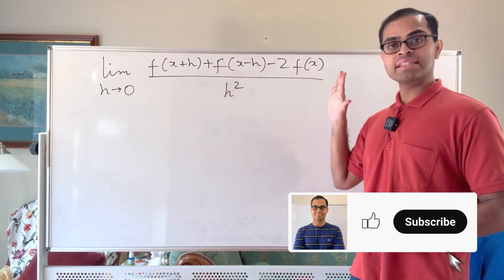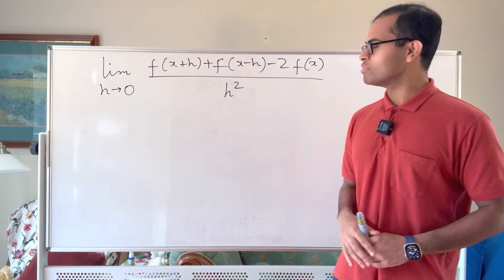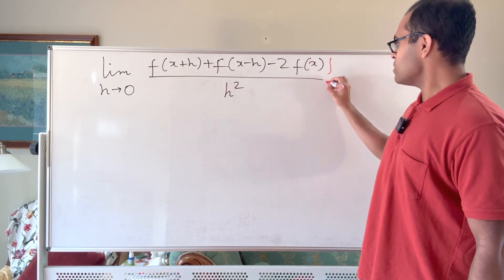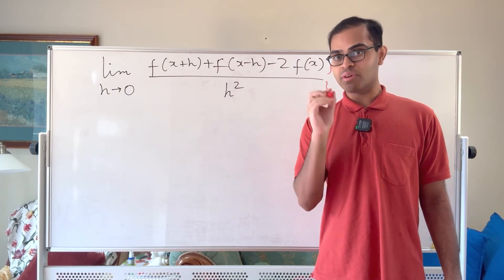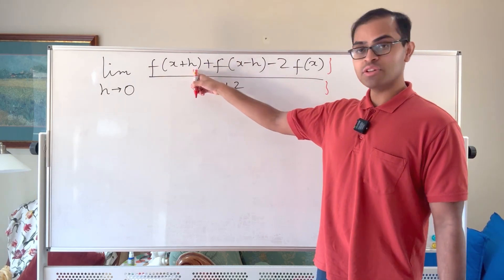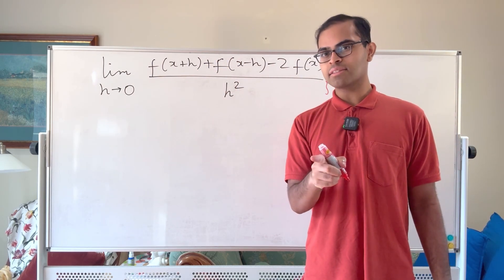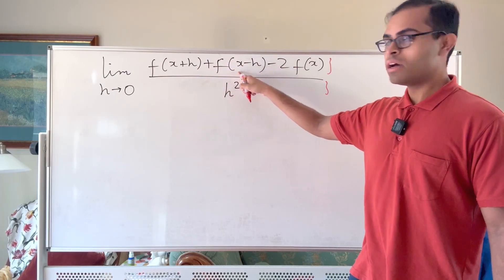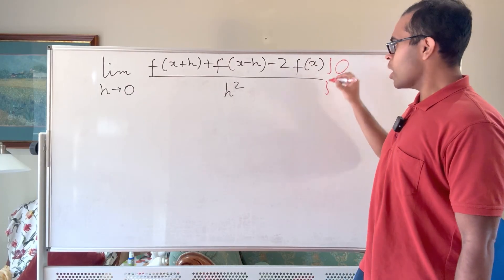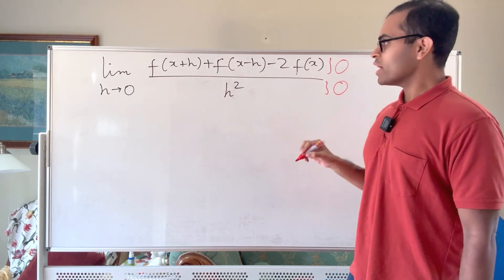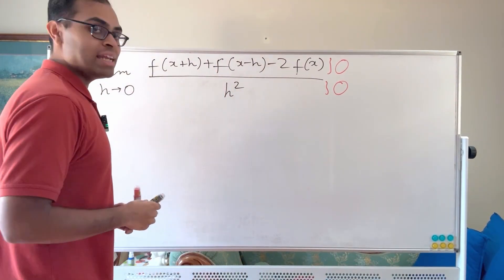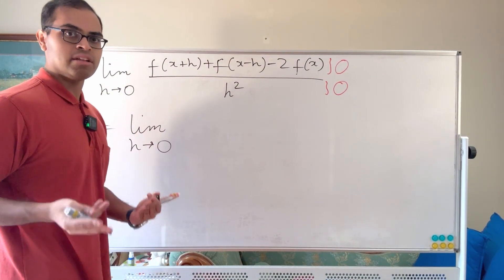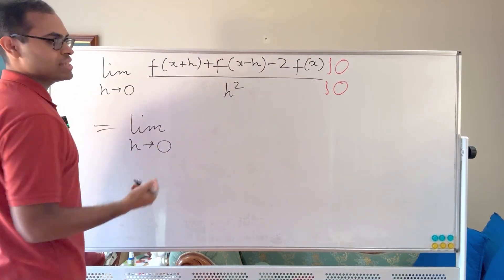We're going to prove that this limit equals the second derivative of f at x, if that exists. The first observation is we're going to use L'Hôpital's rule. L'Hôpital's rule states that if you have an indeterminate form — here it is 0 over 0. Why is it 0 over 0? Because we're assuming f double prime of x exists, so f is differentiable and therefore continuous at x. As h goes to 0, we get 2f of x minus 2f of x, giving 0 on top, and h goes to 0 gives 0 on the bottom. So L'Hôpital's rule tells us we can differentiate top and bottom, and if the resulting limit exists, then the original limit exists — that's an important caveat.